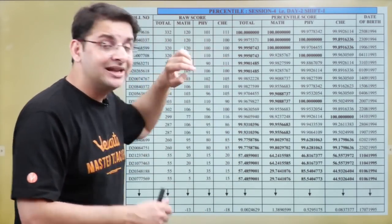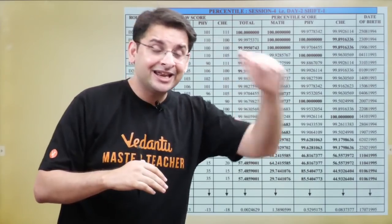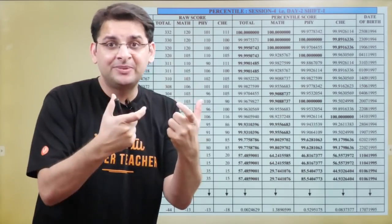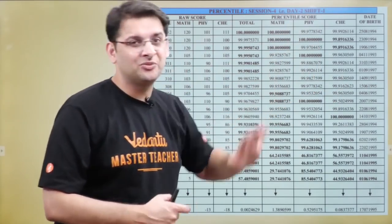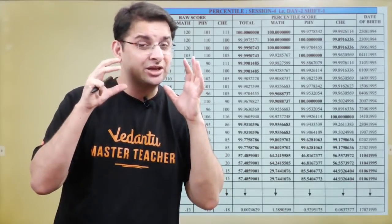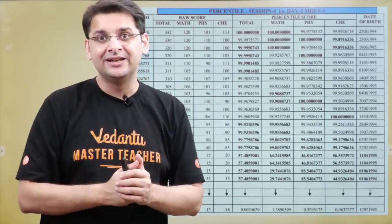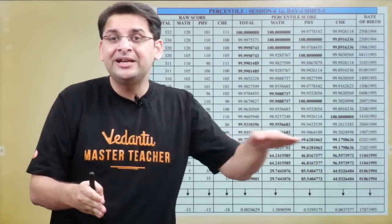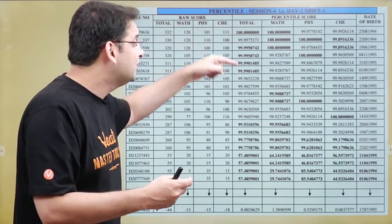In case two students from different sessions end up with the same percentile, we again compare Maths, then Physics, then Chemistry percentile, and if all are the same, it comes down to date of birth. However, this scenario is very unlikely, because the number of candidates in each session is different. Since the denominator is different, the probability of the percentile being the same is very low, given it is calculated to seven decimal places.